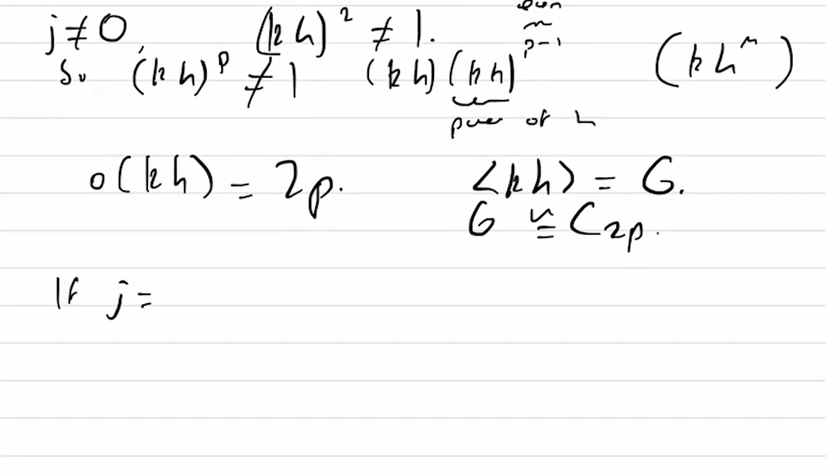If j is 0, then we have khk equals h, so khk equals h inverse.